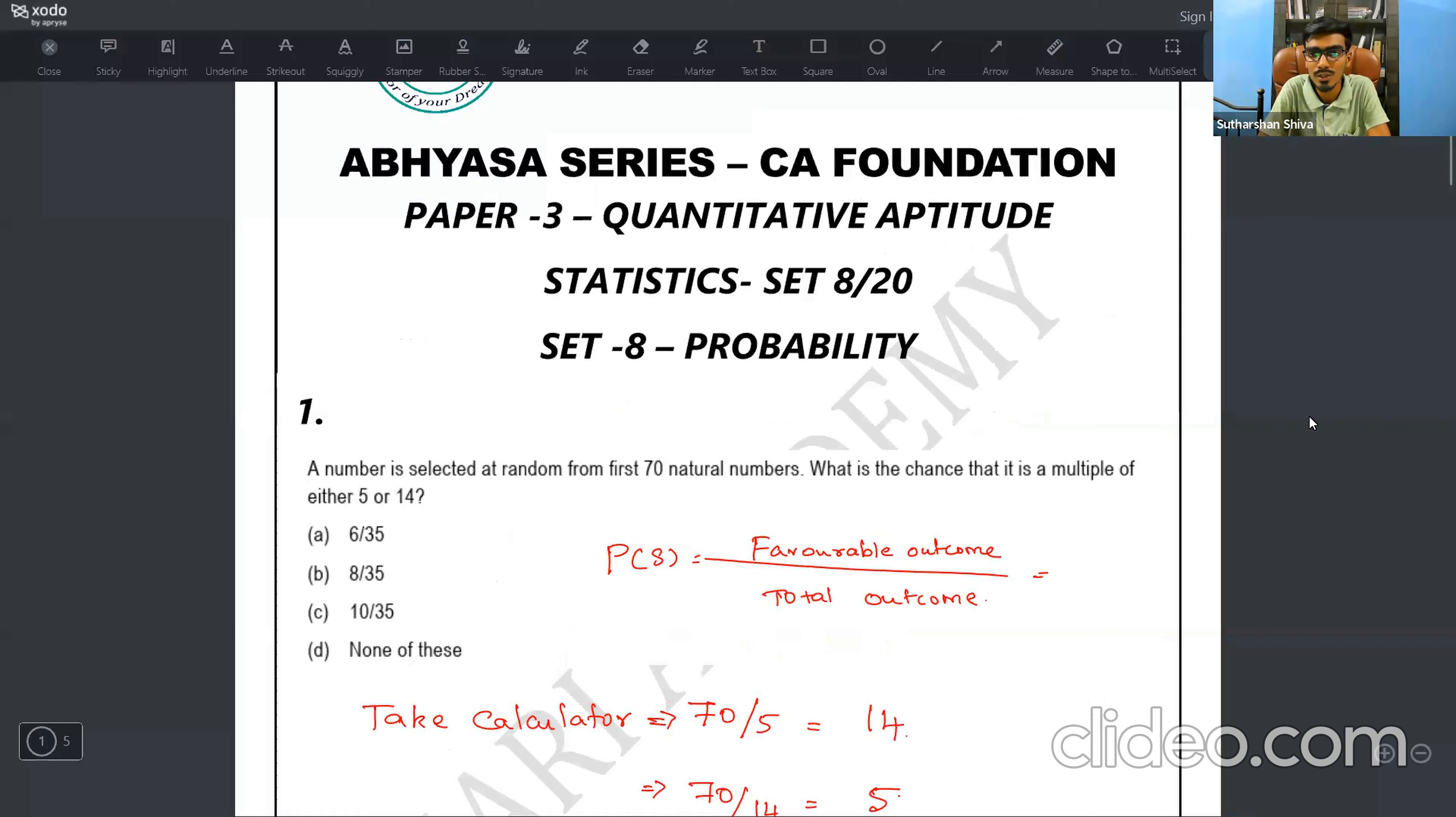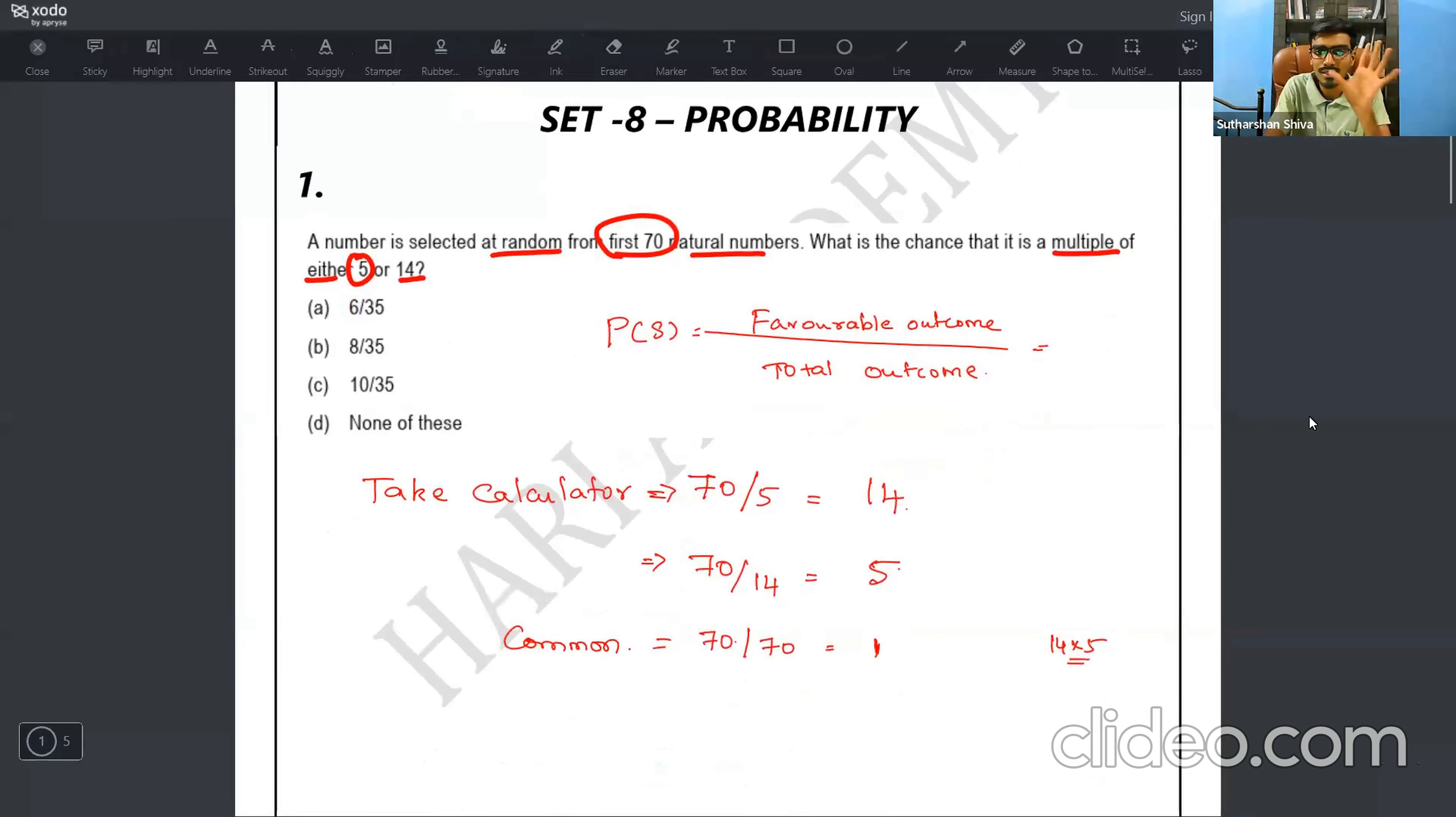They're saying a number is selected at random from first 17 natural numbers. What is the chance that it's a multiple of either five or 14? I'll give a simple trick: probability means favorable outcome by total outcome. From total 17 natural numbers, what are the multiples of five and 14 they are asking. Or condition they are asking. Or condition means you need to add it.